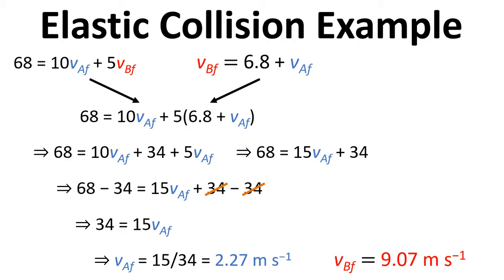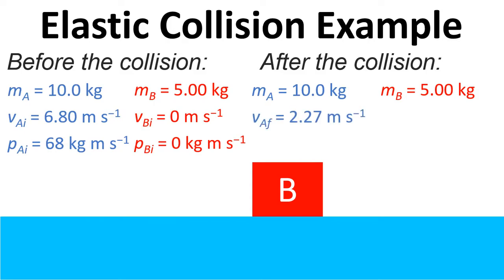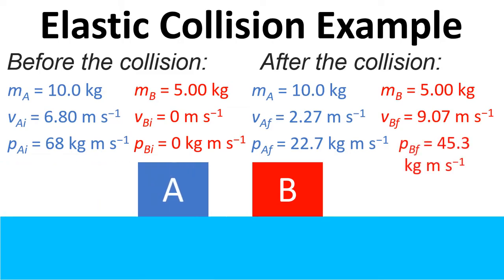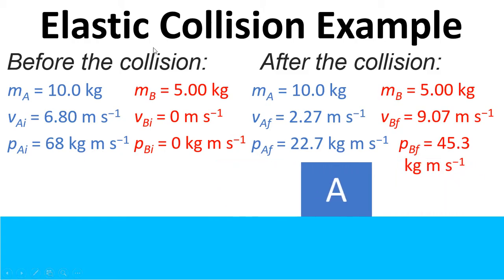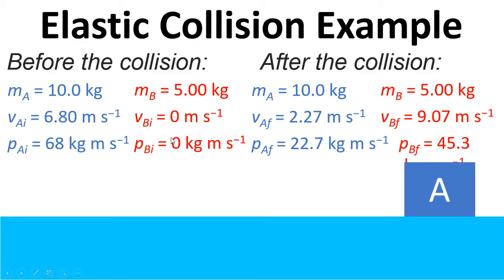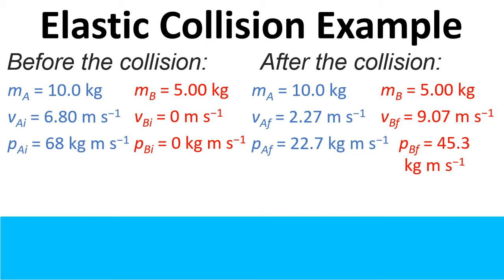So overall V_BF equals 9.07 meters per second. We can now fill in the blanks: we know the final velocity of A, the final momentum of A, the final velocity of B, and its momentum. As a sanity check, momentum before is 68 plus 0, which is 68. Afterwards it's 22.7 plus 45.3, which also equals 68, so momentum has been conserved. We could also work out the kinetic energy before and after and we would see that that has been conserved as well.